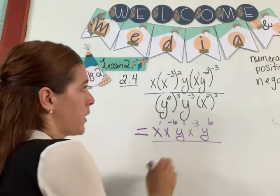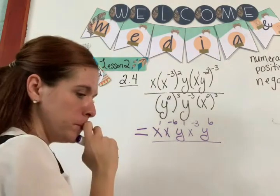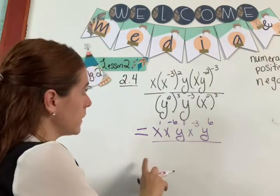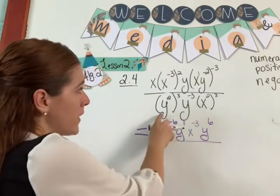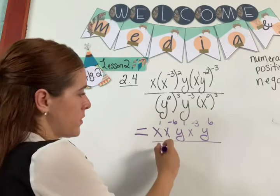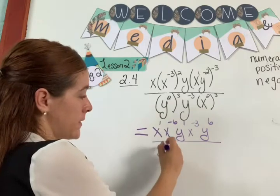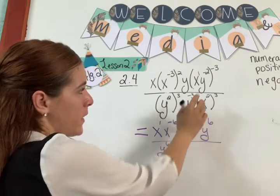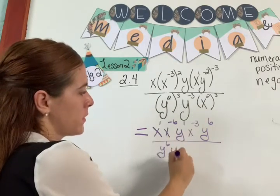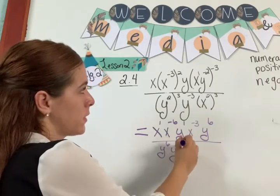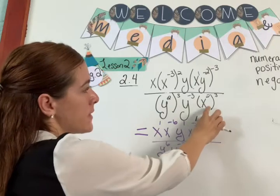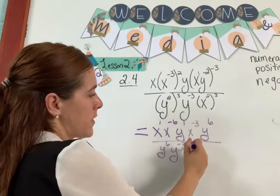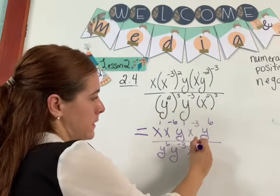Now go to your denominator. You have y to the 2 times 3, so that's y to the 6. Then y to the negative 3. And x to the 2 times 3, so that's going to be x to the 6.